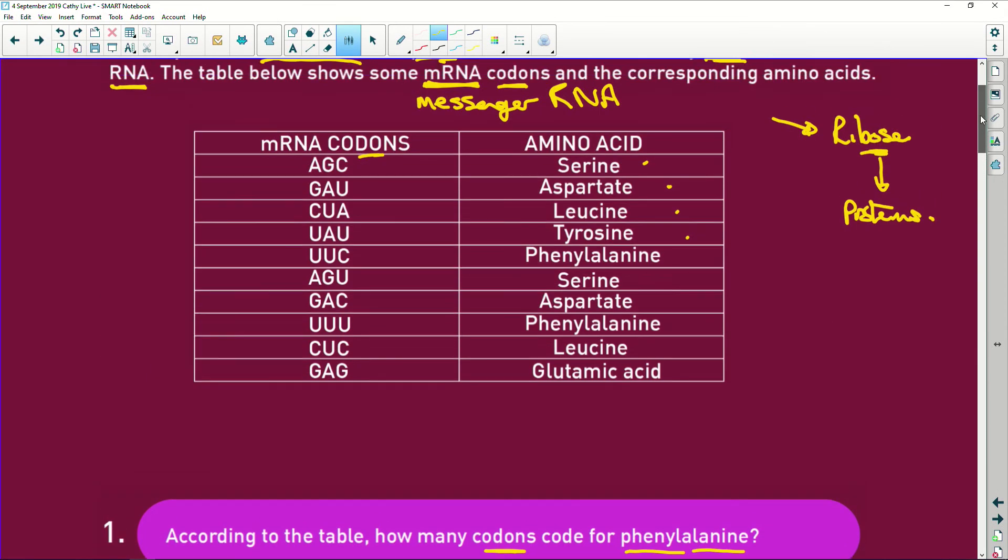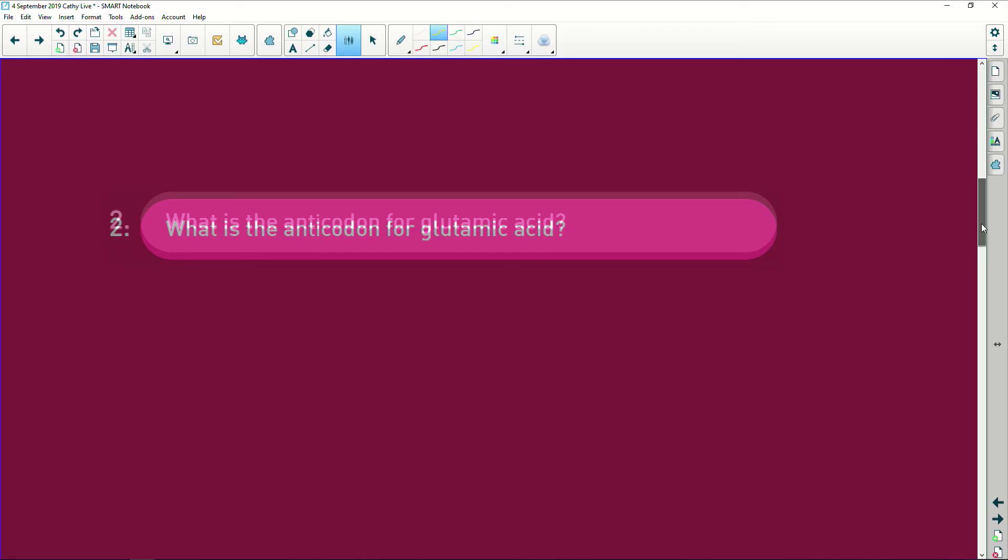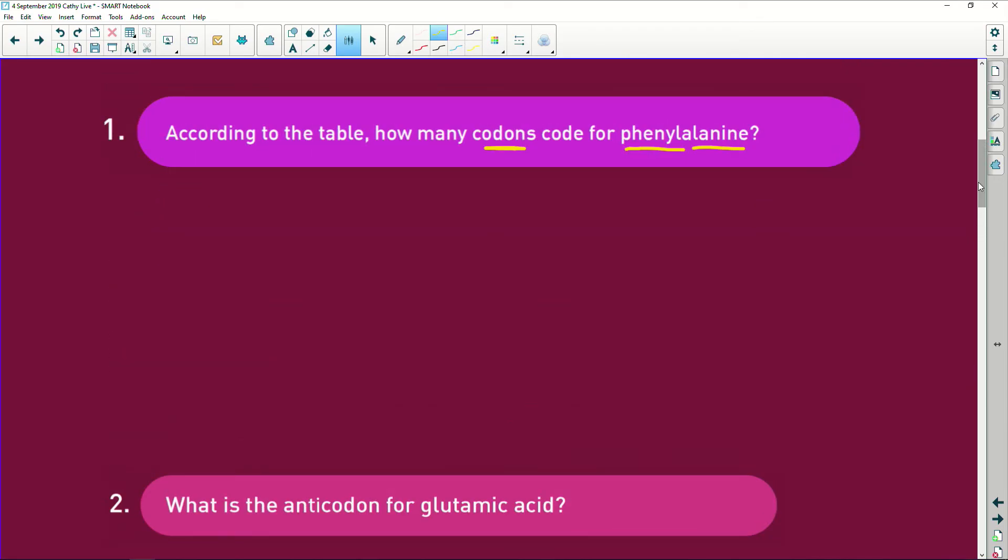Let's look. We've got phenylalanine here and phenylalanine here, so it's UUC and UUU. So we have two codons.